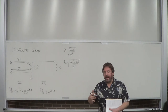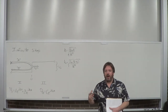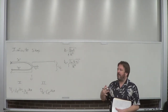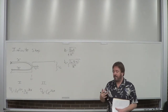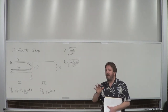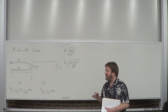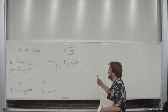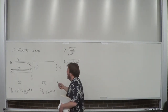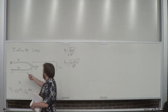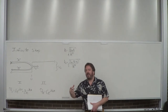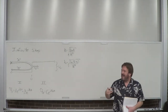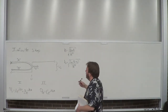However, we can do some model problems. We're going to do this one, and some homework problems that are also on the easier side than the finite box. What I introduced last time was the infinite step potential. You can see it's like the right half of the finite box. This one we can solve.